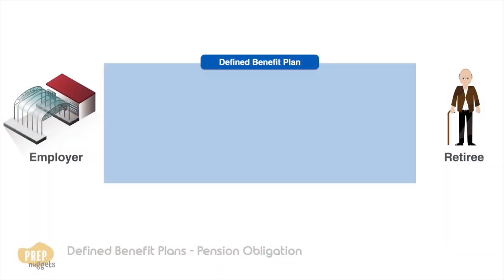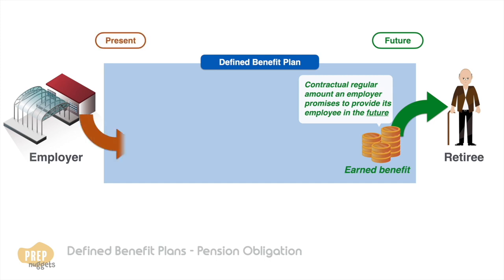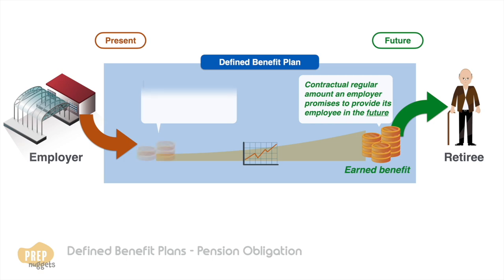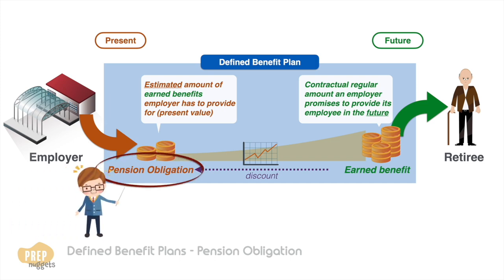We learnt in the last lesson that for a defined benefit plan, the promised benefit is a contractual regular amount an employer promises to provide its employee in the future after his retirement. Presently, the employer is responsible to make the appropriate contributions and investment decisions to ensure that there is sufficient pension assets to pay out the earned benefits when they are due. The estimated amount of earned benefits that the employer is responsible to provide for, discounted to its present value, is known as the pension obligation, which is the focus of this lesson.